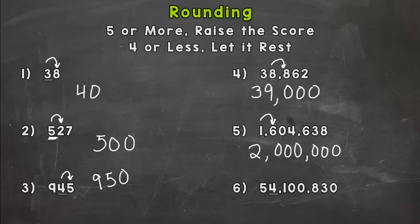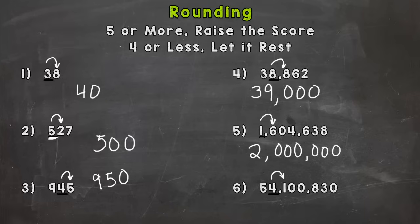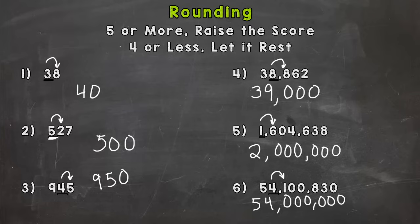Let's take a look at number six. We have a four in the millions place. We are rounding to the millions to see if this number is closer to 54 million or if it rounds up to 55 million. Let's take a look next door — that's a four or less, so we let it rest. The five stays the same, the four rests, and everything to the right changes to a zero. So we have 54 million. There are a few examples of how to round numbers. Hopefully you found that helpful — thanks for watching, and until next time, peace.